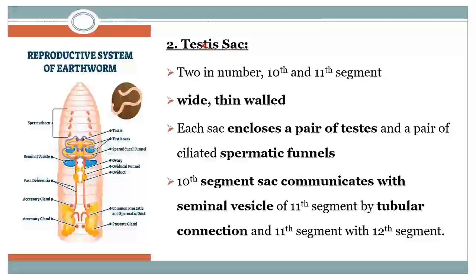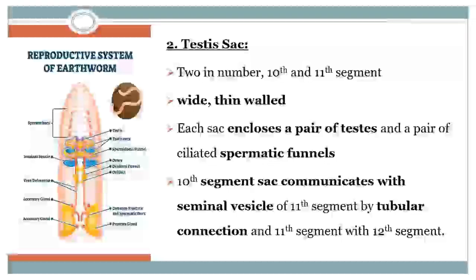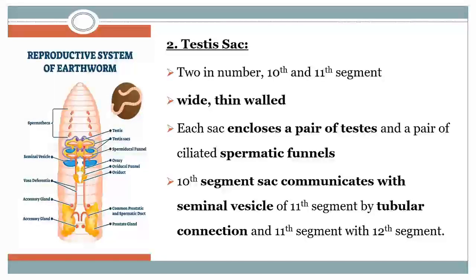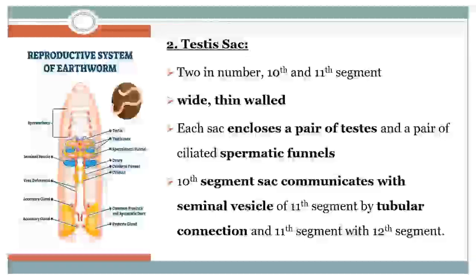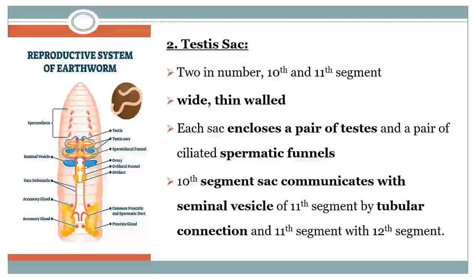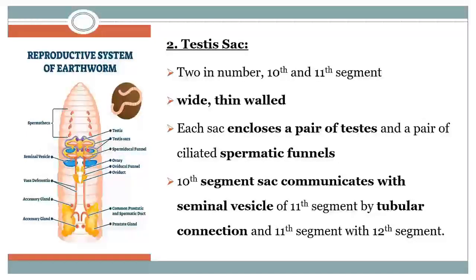The next part is the testes sac. The testes sacs are void, thin-walled structures which are also in a pair and are also located in the 10th and 11th segments. Each testes sac encloses the testes and the spermatogonia. The 10th segment sacs communicate with the seminal vesicle of the 11th segment by a tubular connection, and the 11th with the 12th segment.